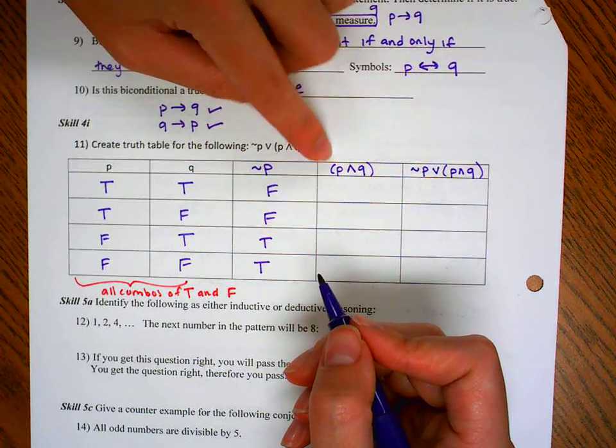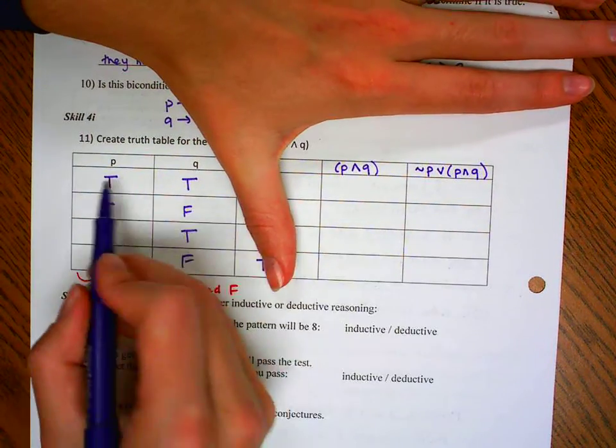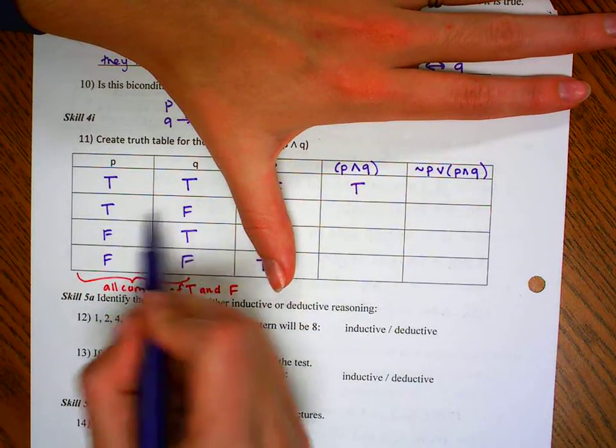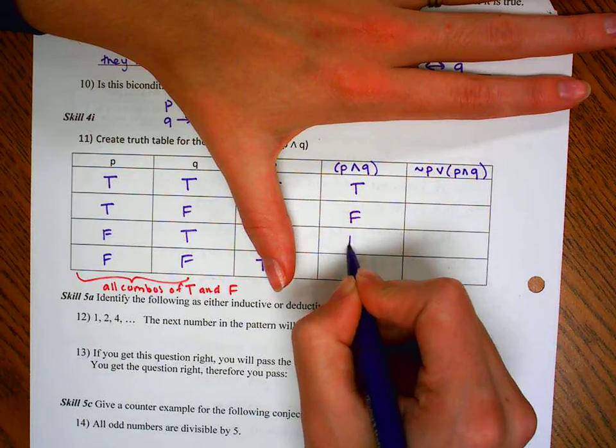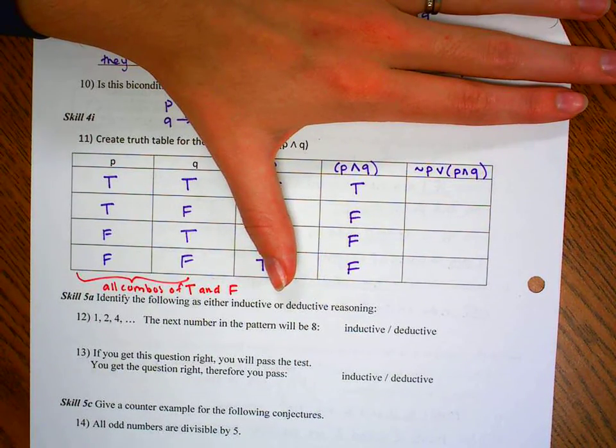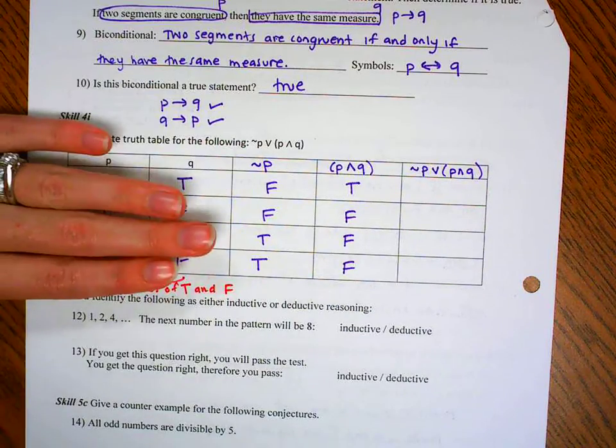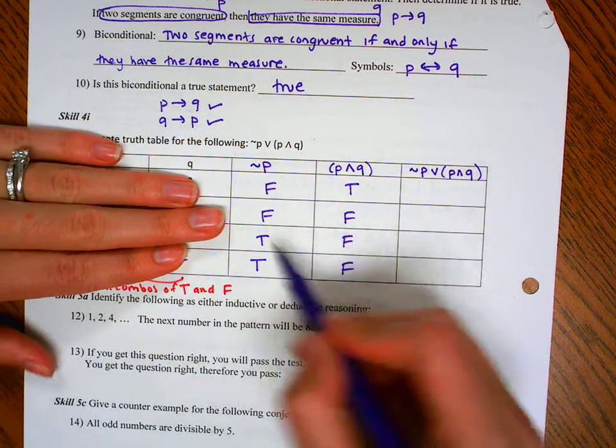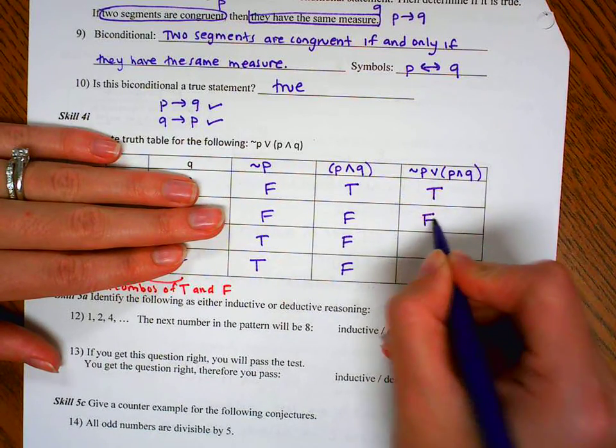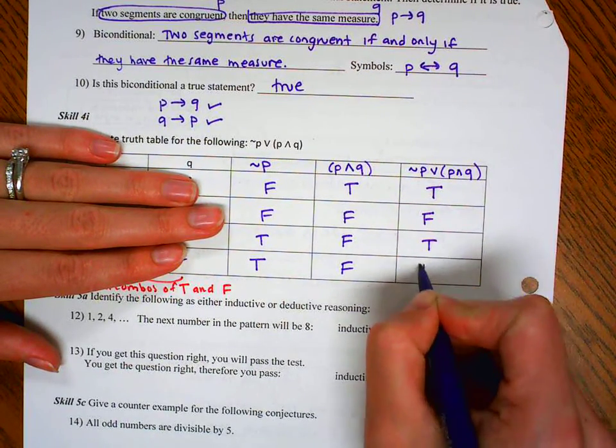Now I want P and Q. So I'm going to take these and do the and. For and to be true, both have to be true. So since these are both true, this is true. But all of these have a false in it. So there's our falses. My last step is the or function between these. As long as one of them is true, the whole thing is true. So there's one true there. There's no trues there, so it's false. There's one true here, one true here.